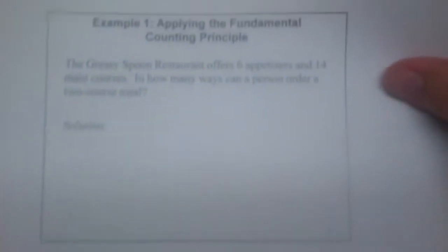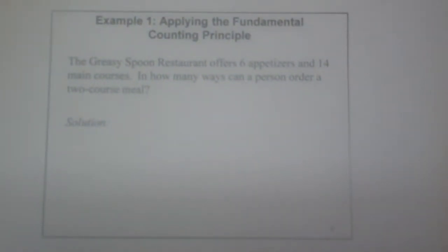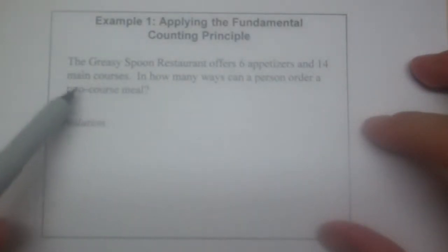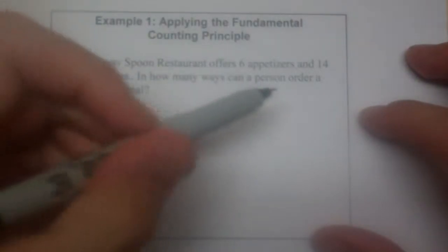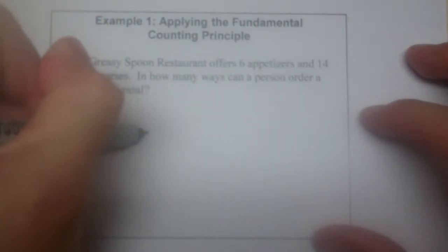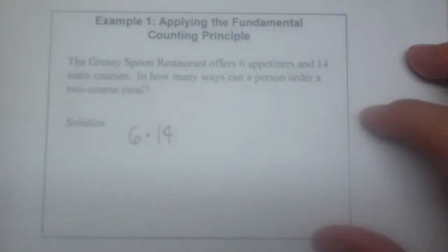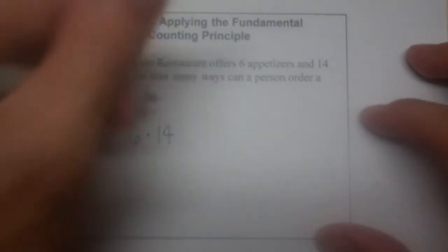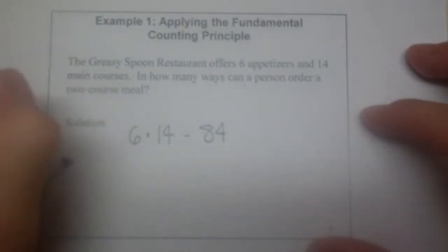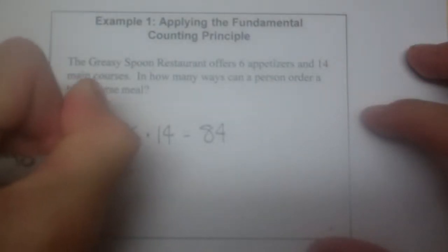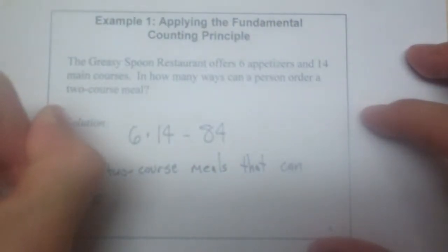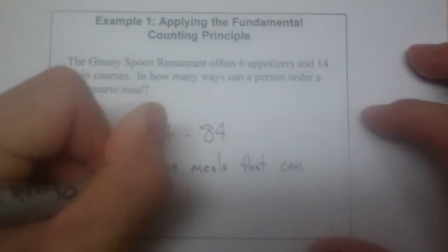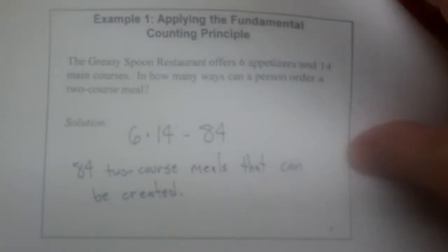Let's take a look at an example. The greasy spoon offers six appetizers and fourteen main courses. In how many ways can a person order a two course meal? Well, basically I'm going to pick one appetizer out of six, and I'm going to pick one main course out of fourteen main courses. So I'm going to multiply those two together by the counting principle. And when you multiply six by fourteen in your calculator, you get the answer of eighty-four. So there are eighty-four two-course meals that can be created, which is pretty cool.